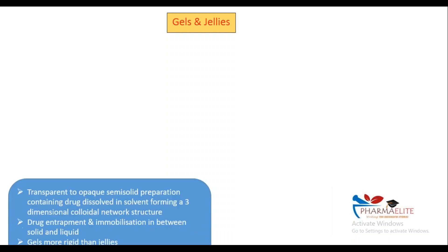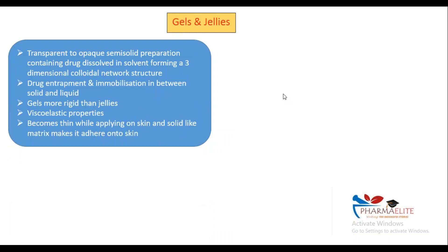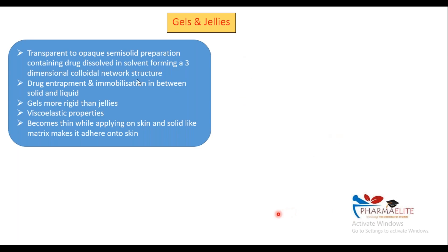Going ahead with regards to gels and jellies — gels and jellies are easy. They are transparent to opaque semisolid preparations. Since it is a gel, there will be a three-dimensional colloidal structure. That 3D structure will be a part of it. Again, you can interact the drug and also immobilize it in between your solid and liquid phase. Your gels are more rigid than jellies, and when you apply them on skin, they become thin and can also form a film.